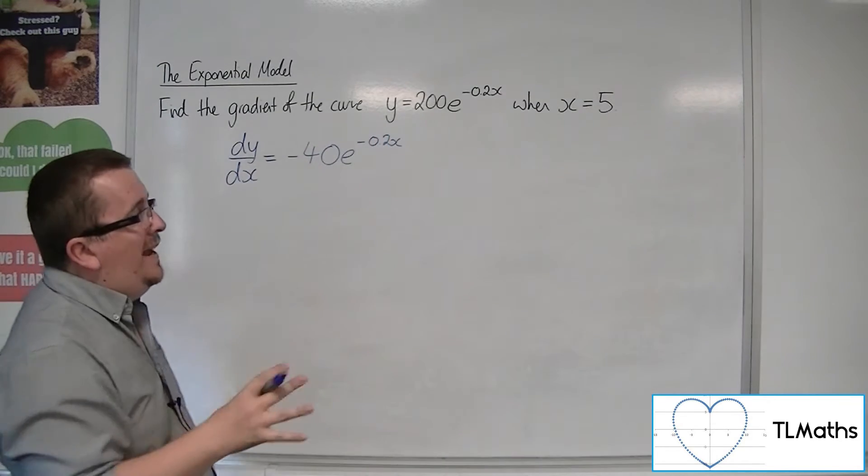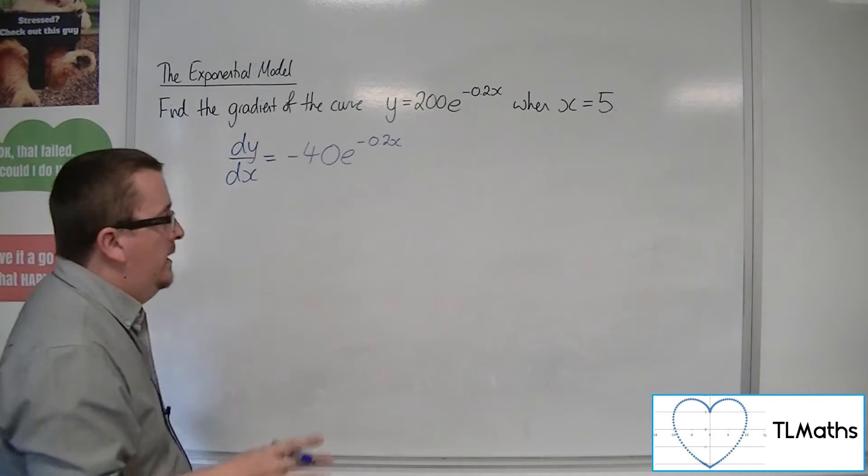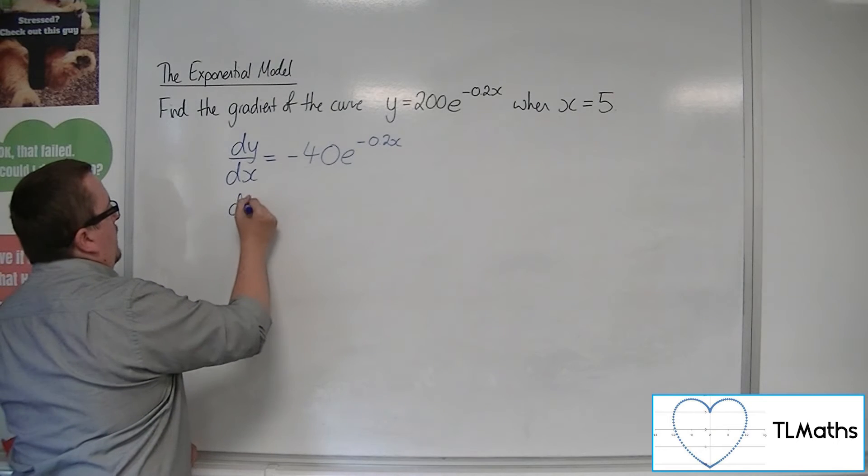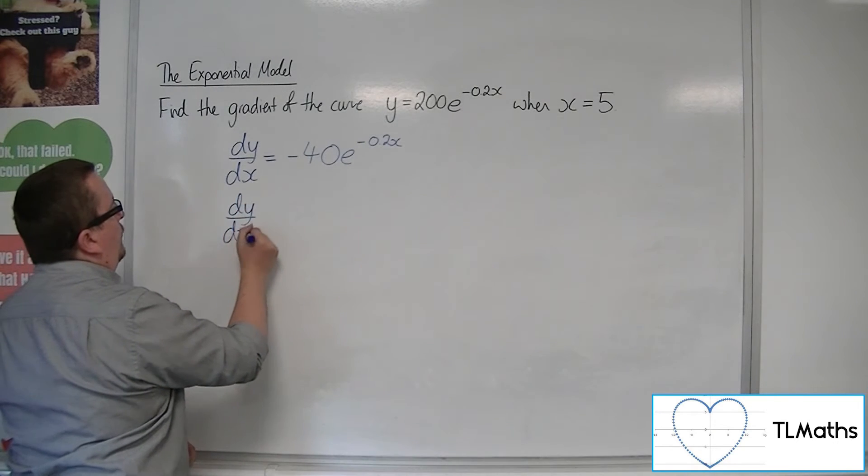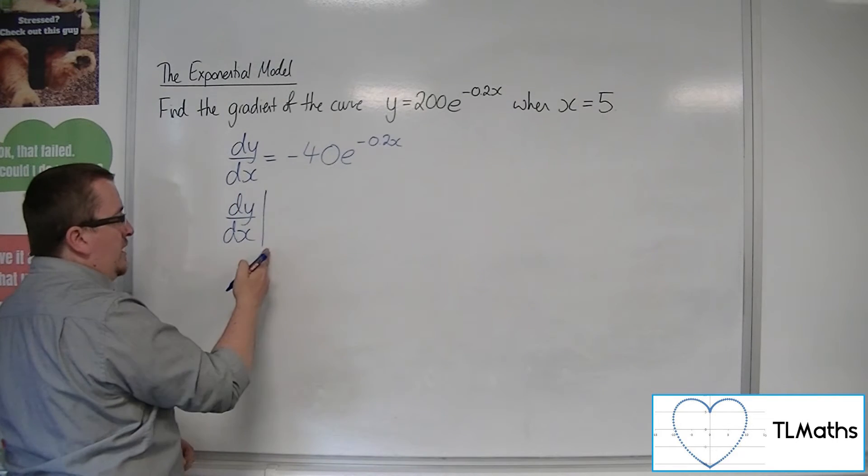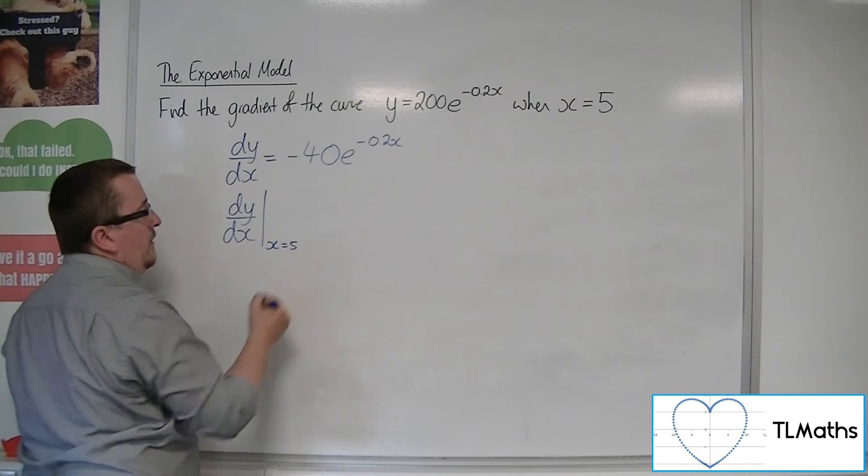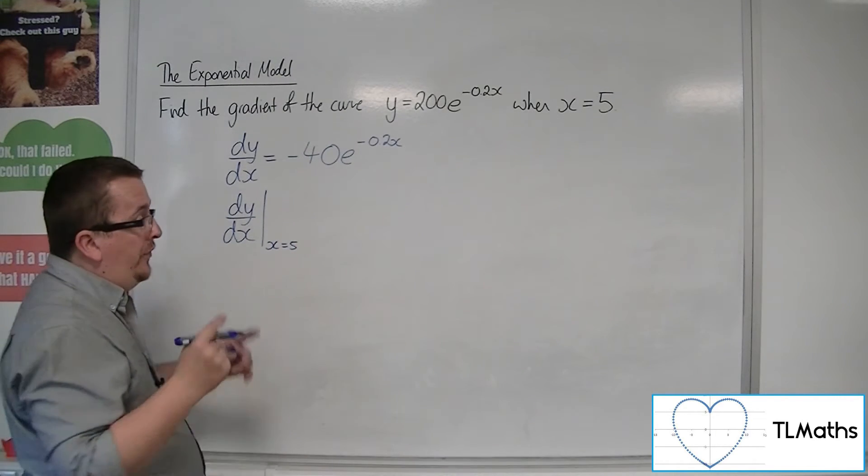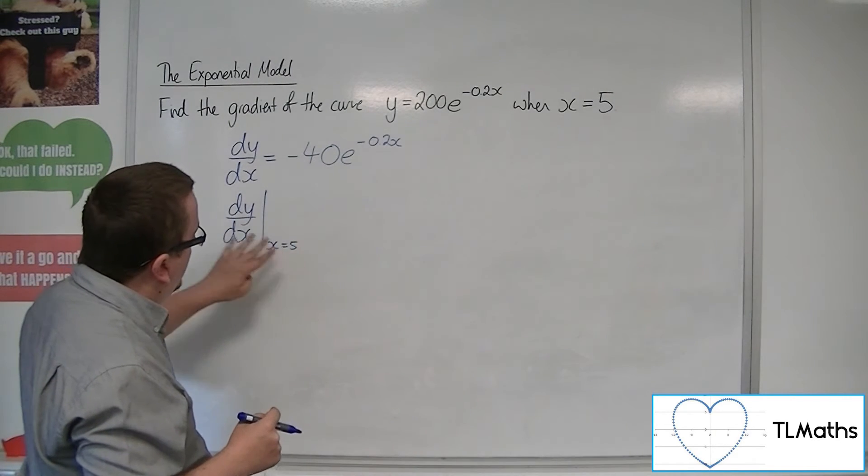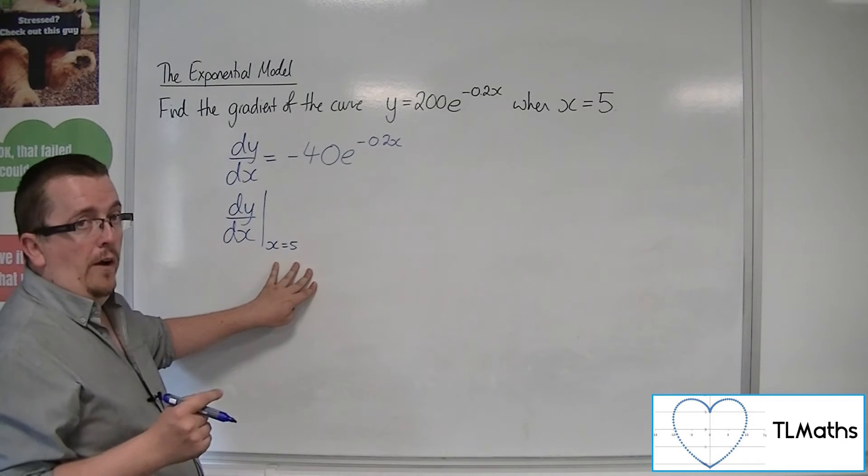And I want to evaluate that when x is 5. Now a way of writing this - evaluating it at x equals 5 - is by drawing a straight vertical line down the side and writing x equals 5 at the bottom. So what this is saying is I'm evaluating the dy by dx when x equals 5.